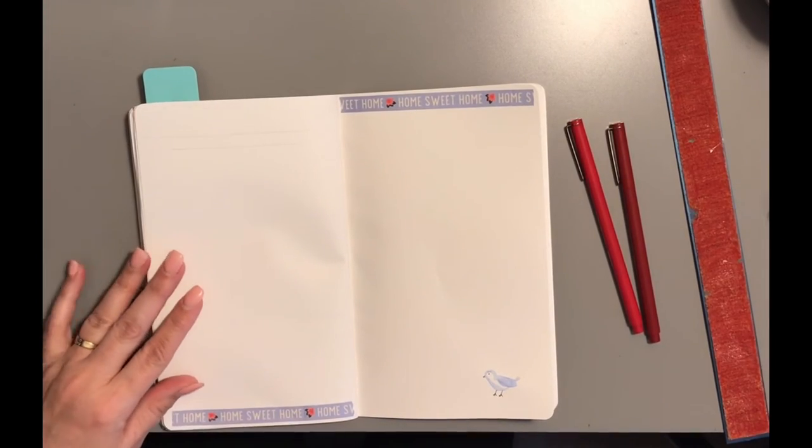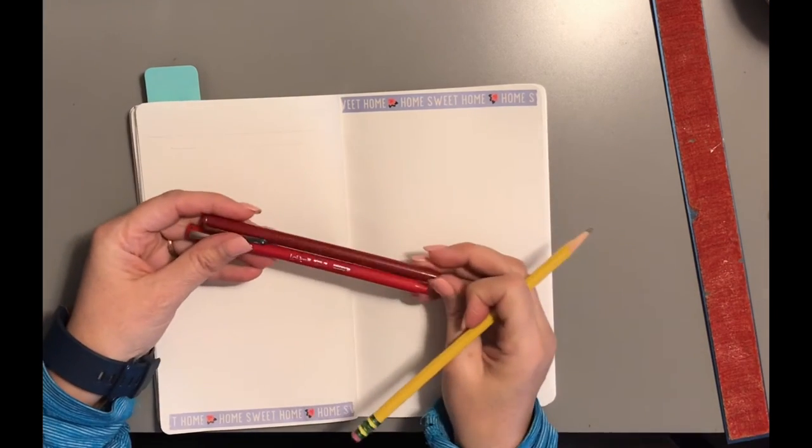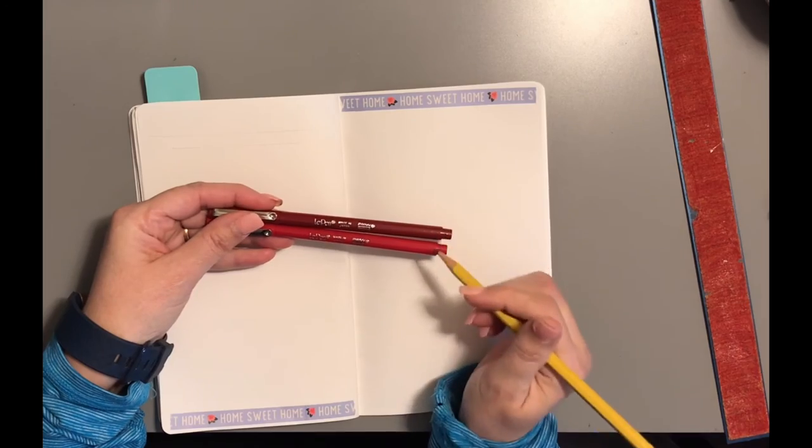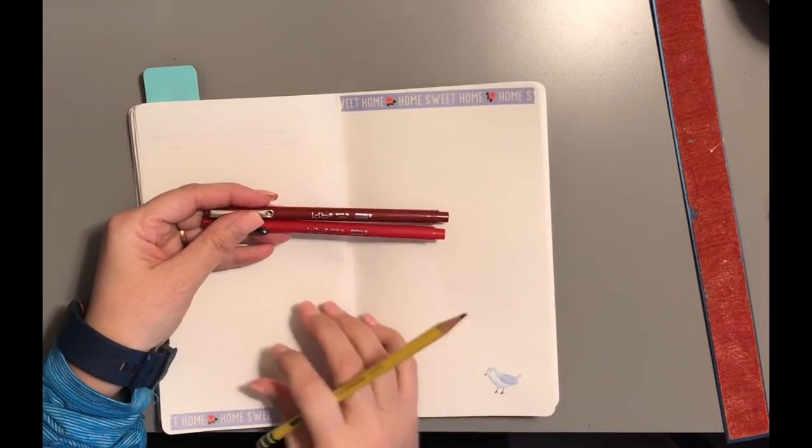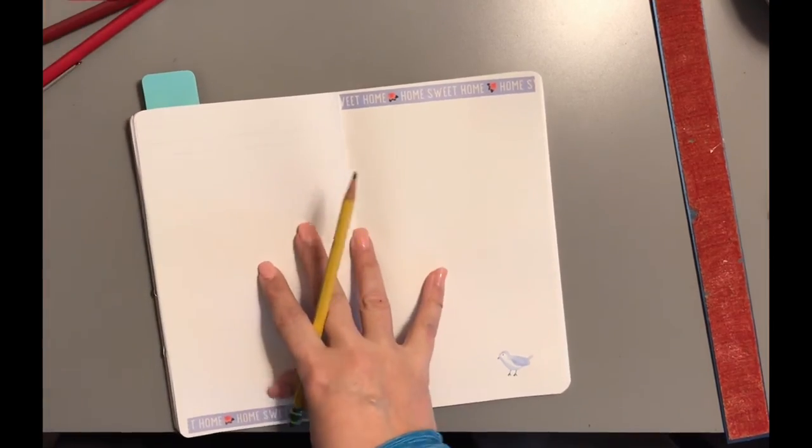All right, we'll do the lettering. I already drew the lines, I forgot to turn the video on. I'm going to use these two colors. These are Le Pens. One's kind of dark red and one's light red, but they match that rose. Okay, but first I will draw it in pencil.